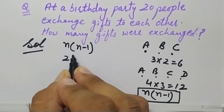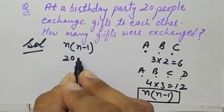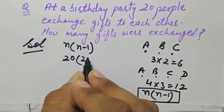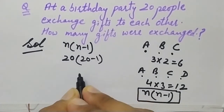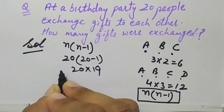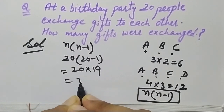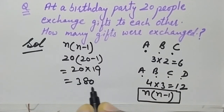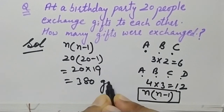So when there are 20 people, the formula is n × (n - 1), which gives 20 × (20 - 1) = 20 × 19 = 380. So the total number of gifts exchanged is 380.